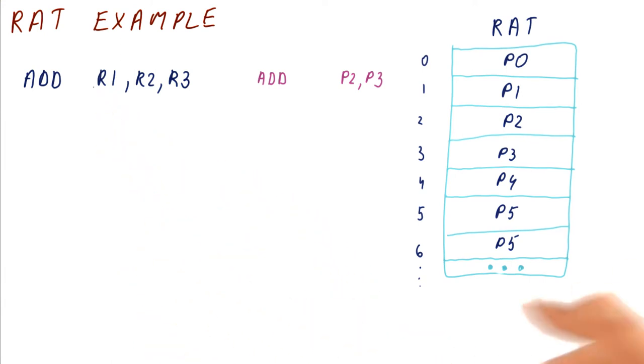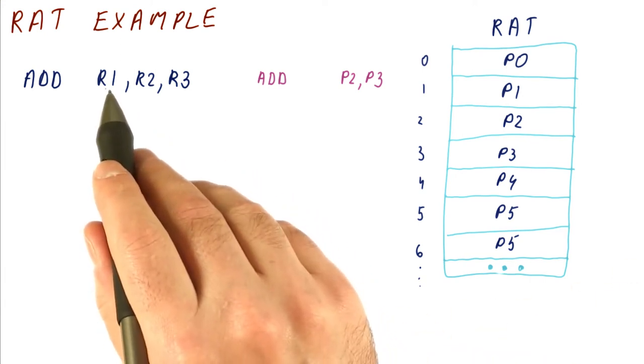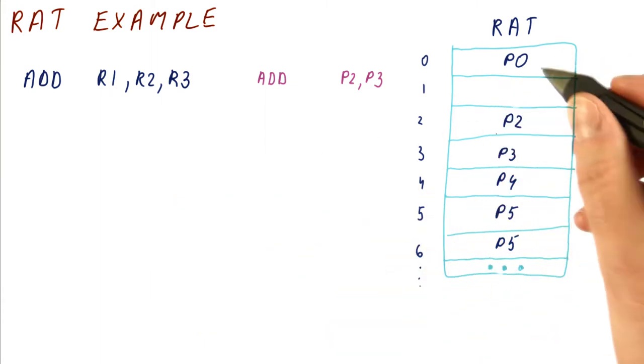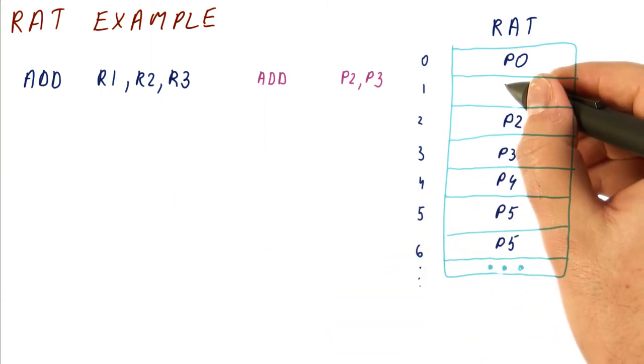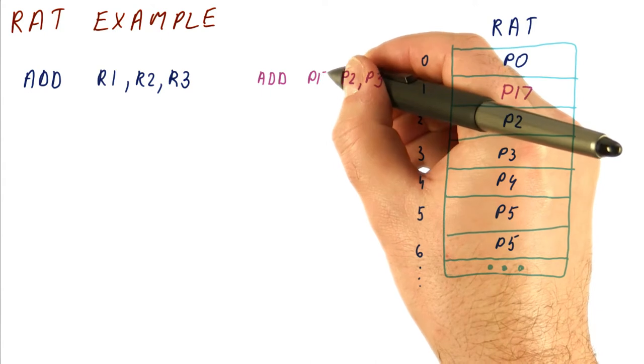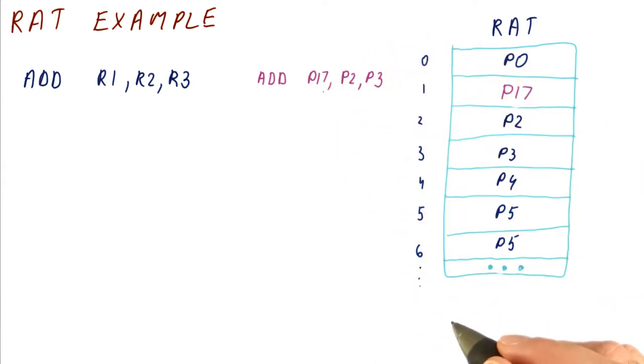And now the question is, where are we going to put our result? Well, we're going to put our result in a new place for R1, so not in P1. So we will change the RAT to put the result in some P17 or whatever. So now we're going to say that this goes to P17, and then we are going to use P2 and P3 for the inputs.